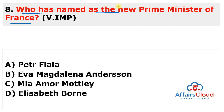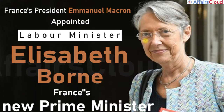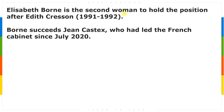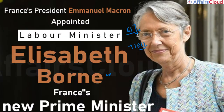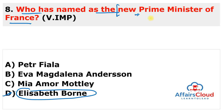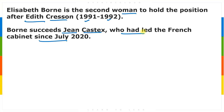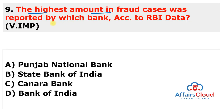Next question: who has been named the new Prime Minister of France? The answer is Elisabeth Borne. French President Emmanuel Macron named Elisabeth Borne, 61 years old and former Minister of Transport, Ecology, and Labor. She is the second woman to hold the position after Edith Cresson, who was PM from 1991 to 1992. Borne succeeded Jean Castex, who had led the French cabinet since July 2020.